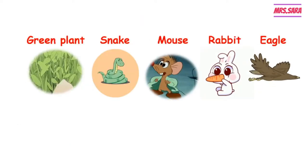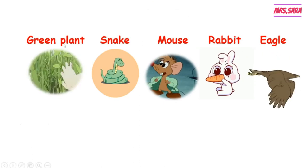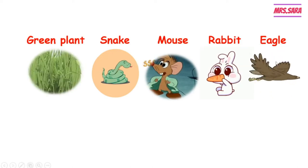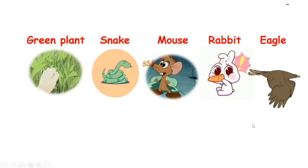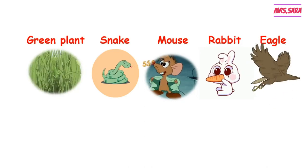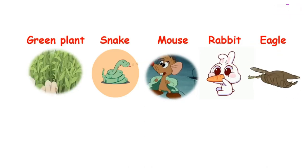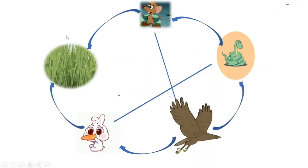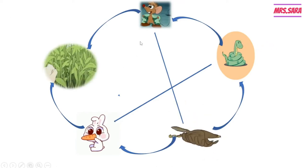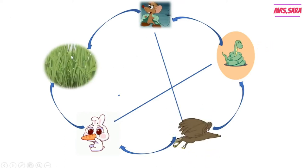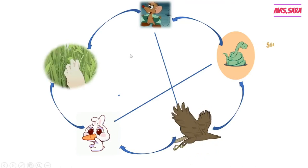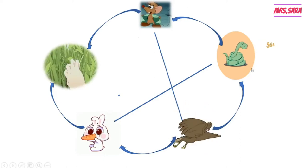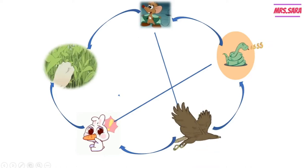As you can see here, we have a picture of a green plant, a picture of a snake, mouse, rabbit, and eagle. We can make many food chains from those pictures, and we can make a food web. The green plant or grasses is the producer. The mouse and rabbit both eat the green plant, so they are both considered first consumers.